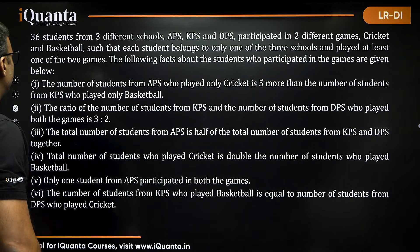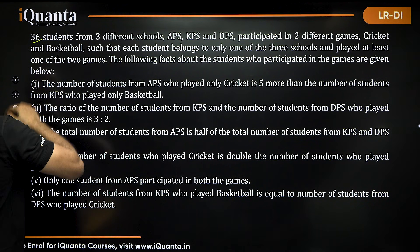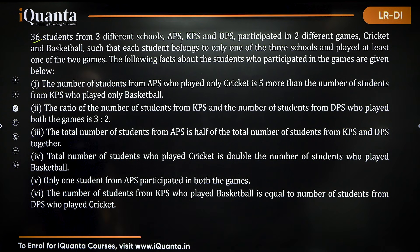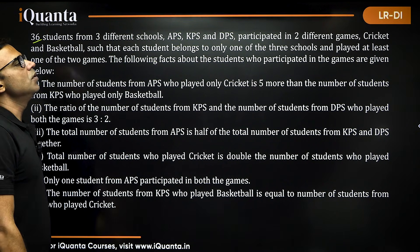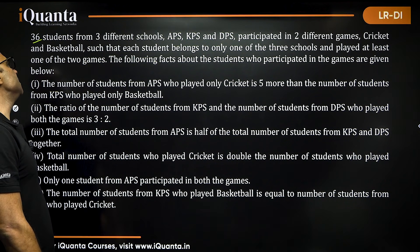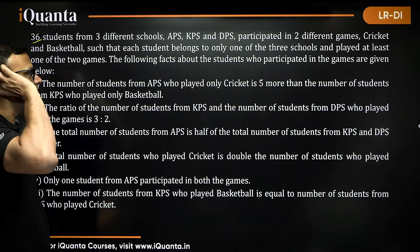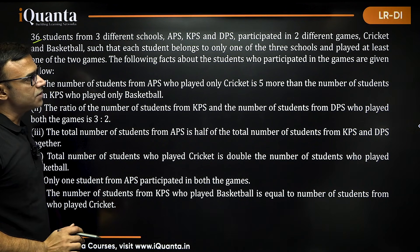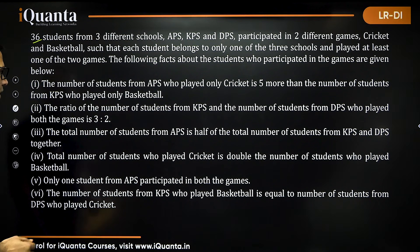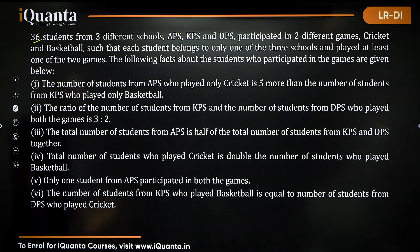This is an easier question based on a Venn diagram. It involves 36 students from 3 different schools — APS, KPS, DPS — who participated in 2 different games: cricket and basketball, such that each student belongs to only one of the 3 schools and played at least one of the 2 games. So there will be nothing outside the Venn diagram. The following facts about the students participating in the games are given.